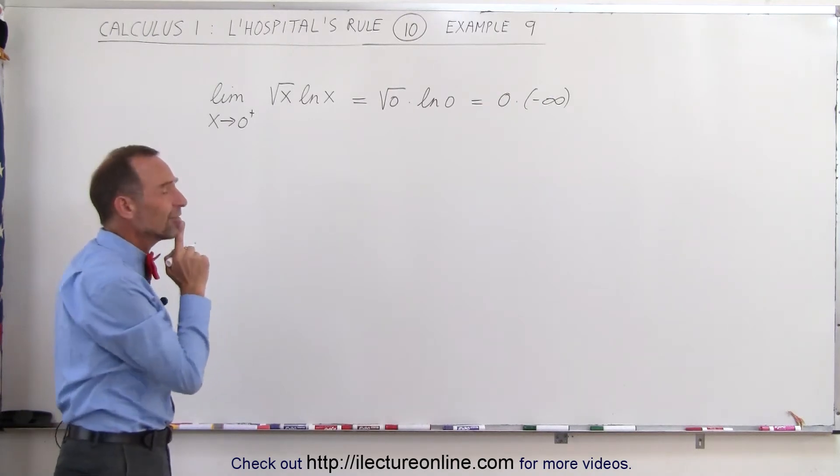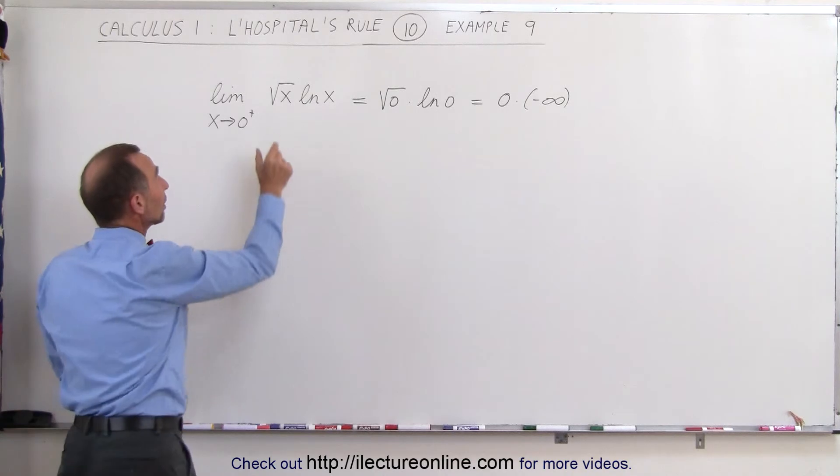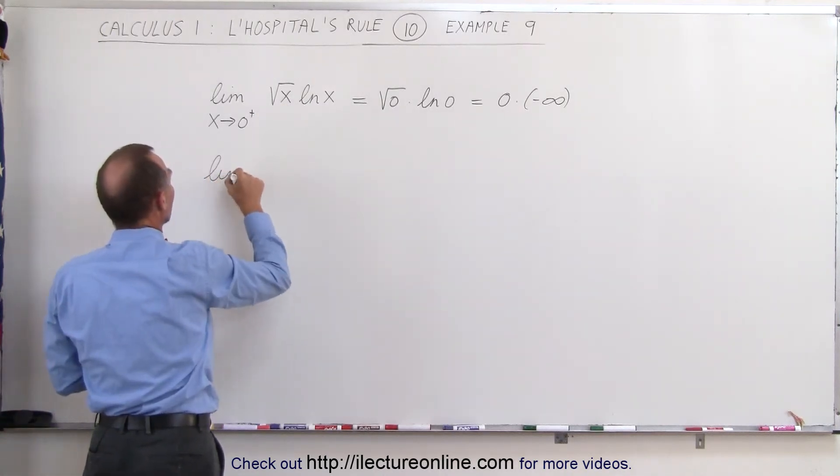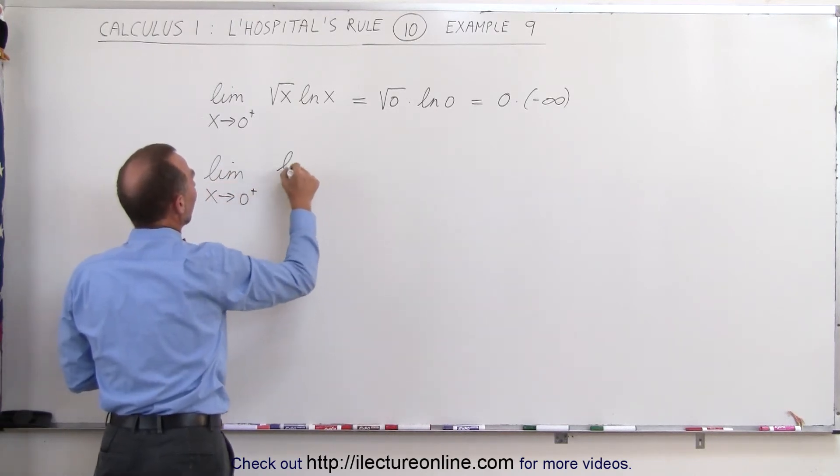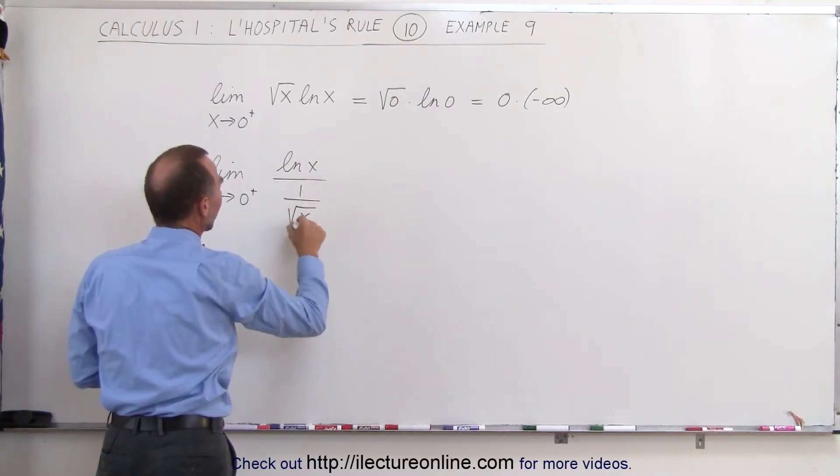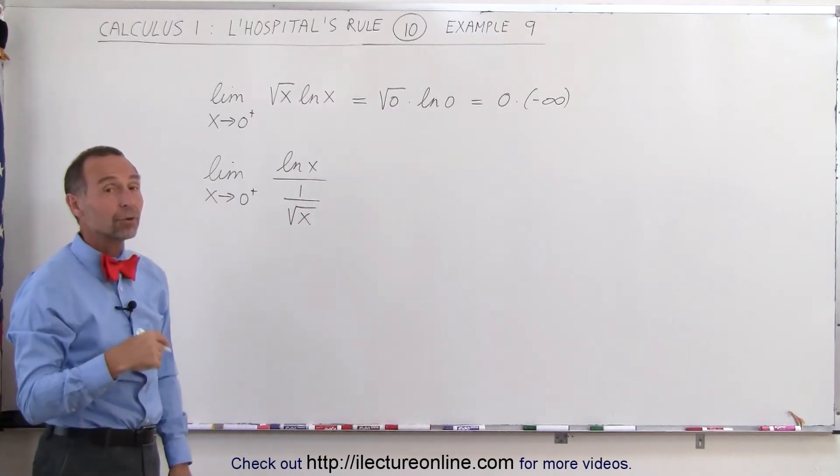What we can do instead is try to write in a form where L'Hopital's rule can be used. In other words, we can move the square root of x to the denominator when we write it like this. The limit as x approaches 0 from above of the natural log of x divided by 1 divided by the square root of x. Now we have it in a form where we can use L'Hopital's rule.